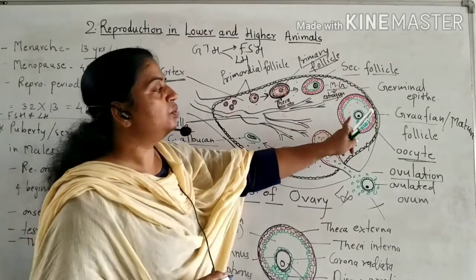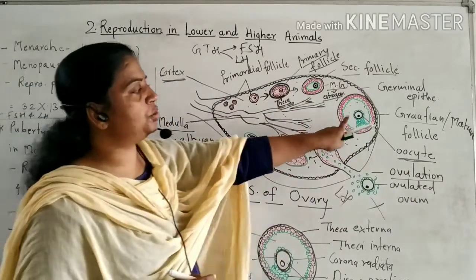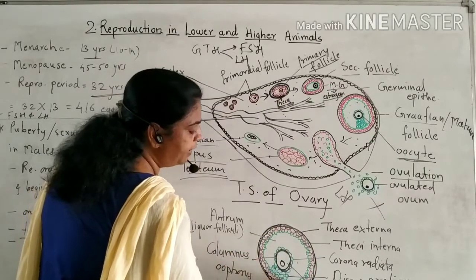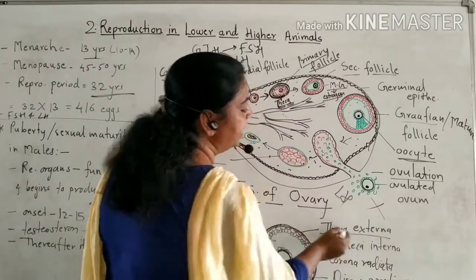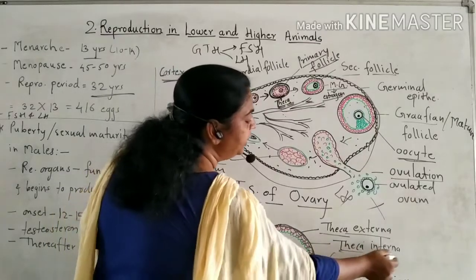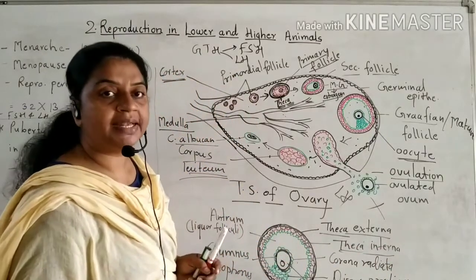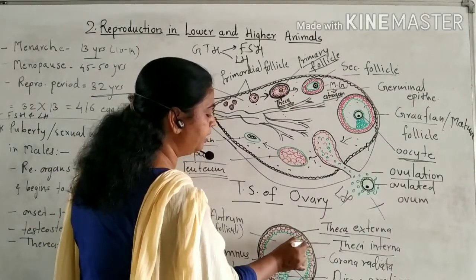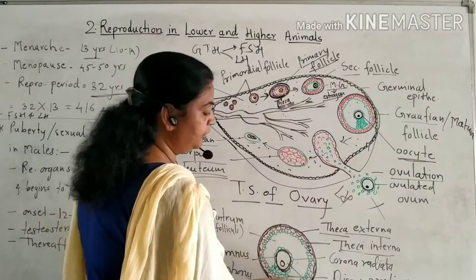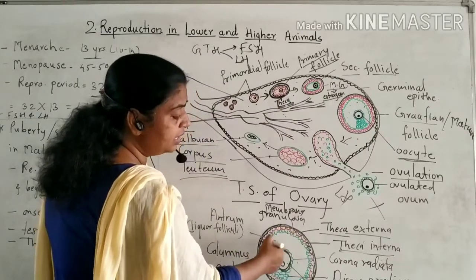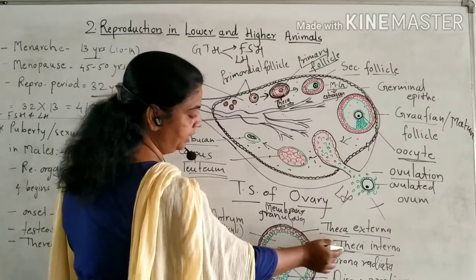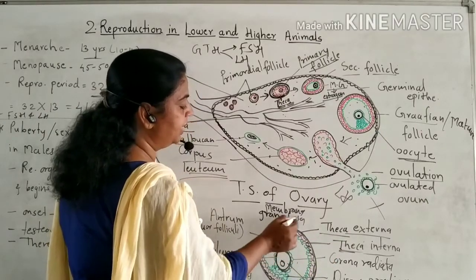Now we will see the detailed structure of the mature follicle or Graafian follicle. The outermost black fibrous protective layer is called the theca externa, which is a non-cellular layer. Inner to it is the theca interna, composed of cuboidal follicular cells which secrete the hormone estrogen. Inner to the theca interna is the green-colored layer called the membrana granulosa.